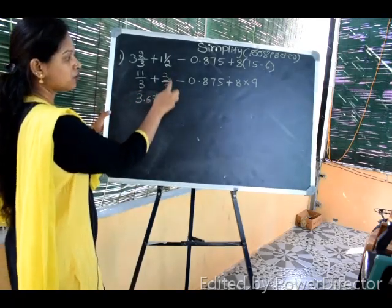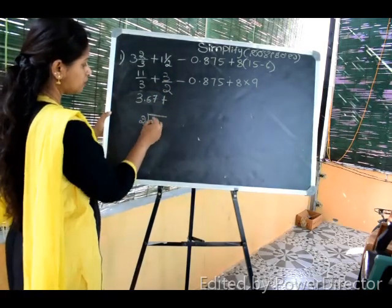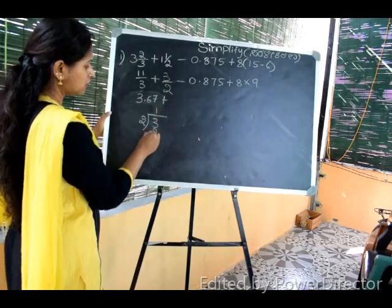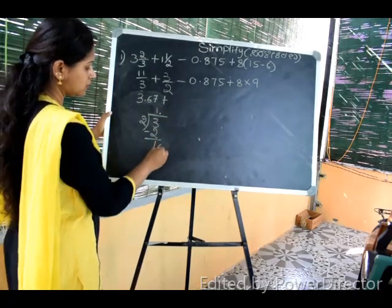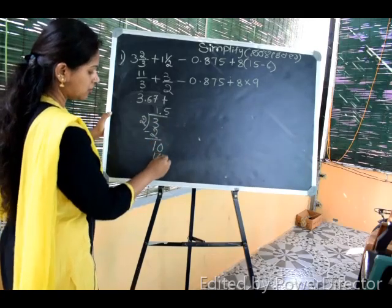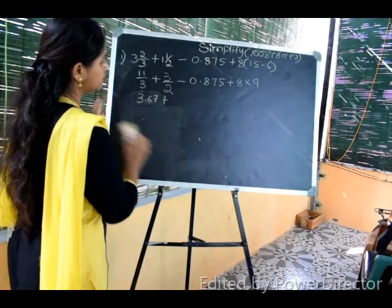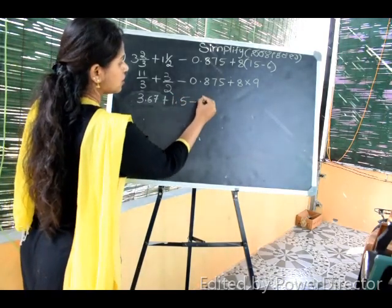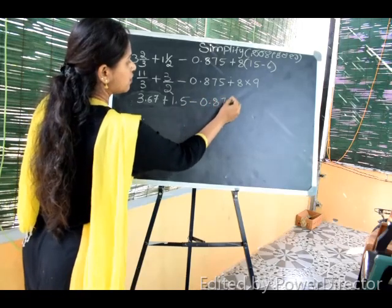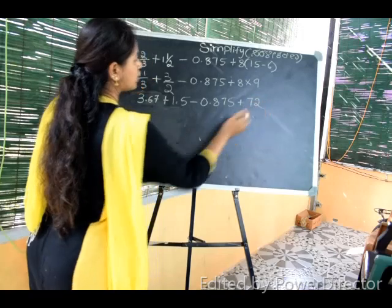So this is the decimal fraction. 1 is 2. 3 minus 2 is 1.0. 2, 5 is 10. This is 1.5. Plus 1.5 minus 0.875 plus 8972.